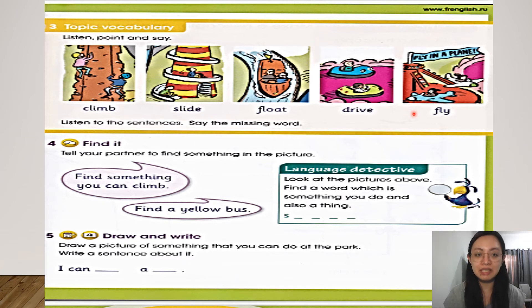This time I want you to listen to the sentences and say the missing word. I will say the sentences. I can the tower. What can you do with the tower? The correct answer is climb or climb up. Next one. I can the slide. I can slide in the slide. I can in the water. What's the correct answer? Float. Very good.